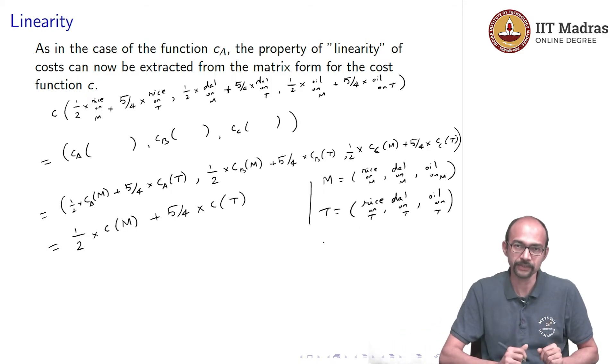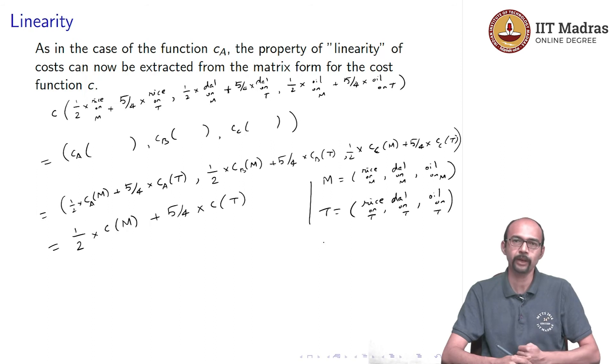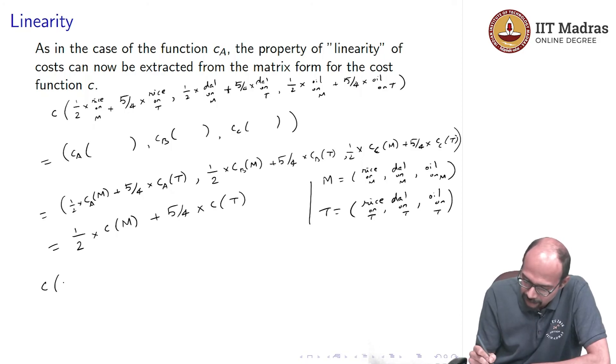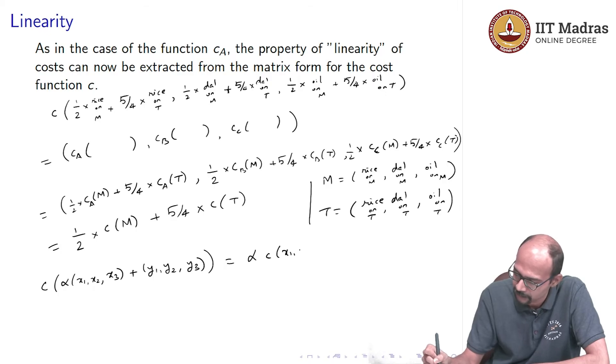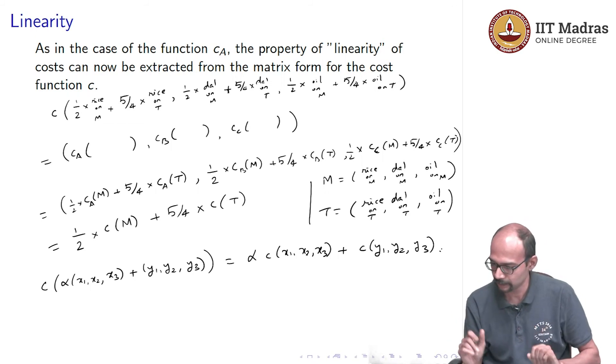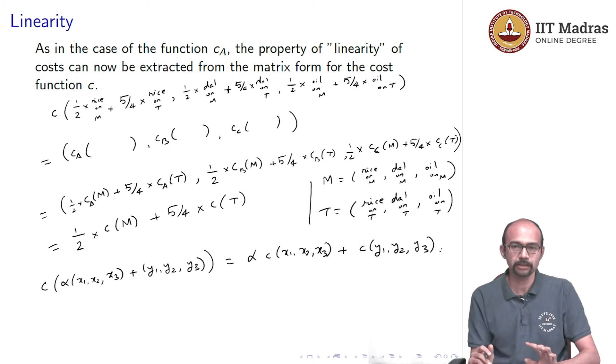Notice I do not even remember what the quantities were. I did not need that anywhere. So, I can instead replace this rice and dal and so on by variables. I could have called them x1, x2, x3, and y1, y2, y3 and the whole thing would have worked out in the same way. So, effectively what we are saying by linearity is that if you have alpha times (x1, x2, x3) plus (y1, y2, y3), this is going to be just alpha times C of (x1, x2, x3) plus C of (y1, y2, y3). That is what we mean by linearity. This is a very important property and this is very special to the kind of functions that we are dealing with. They are linear functions.